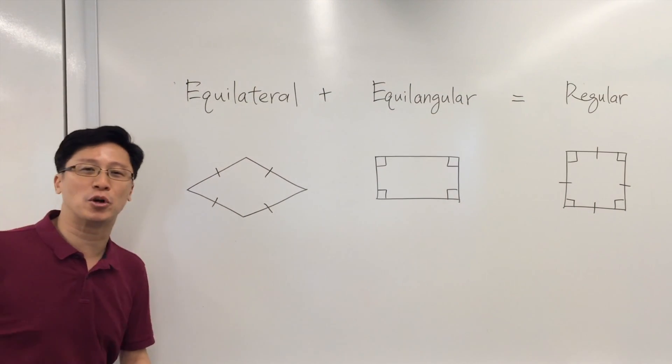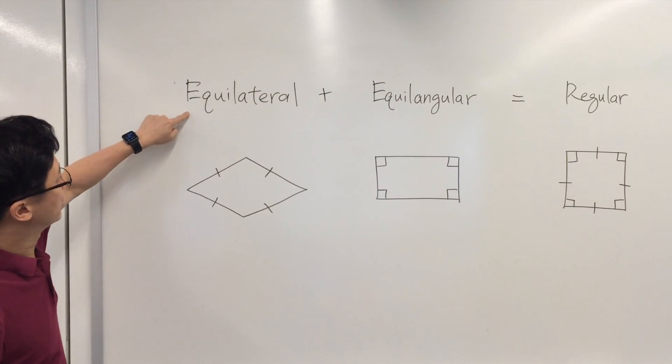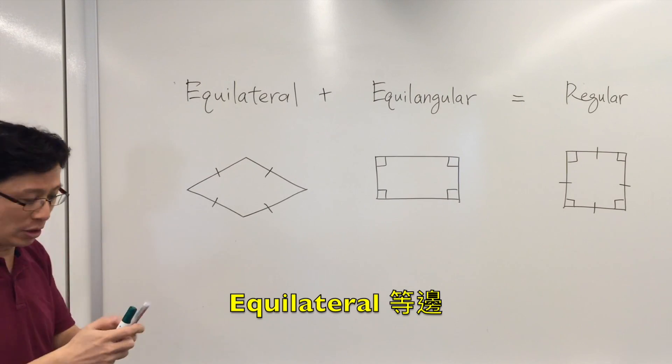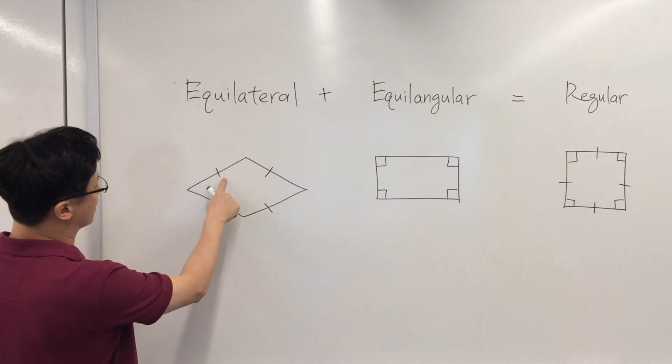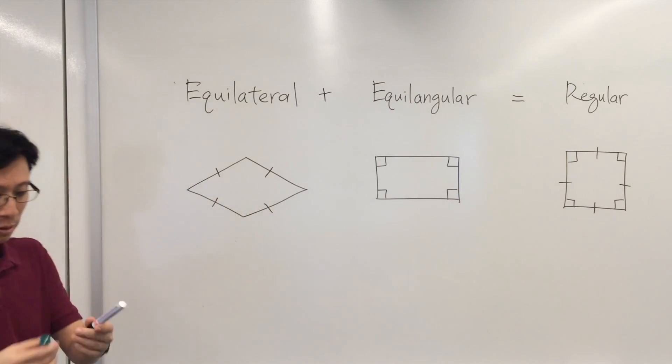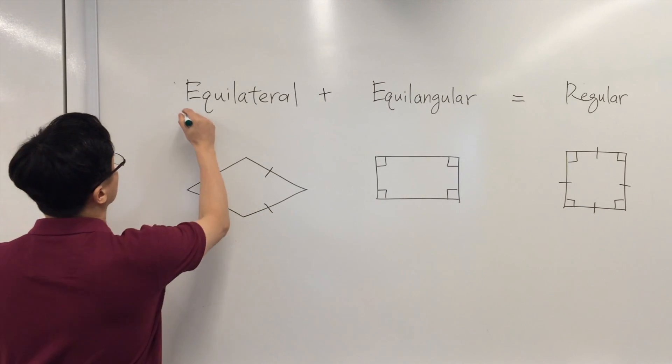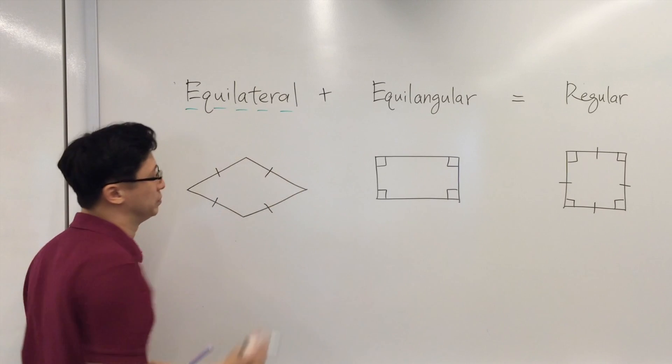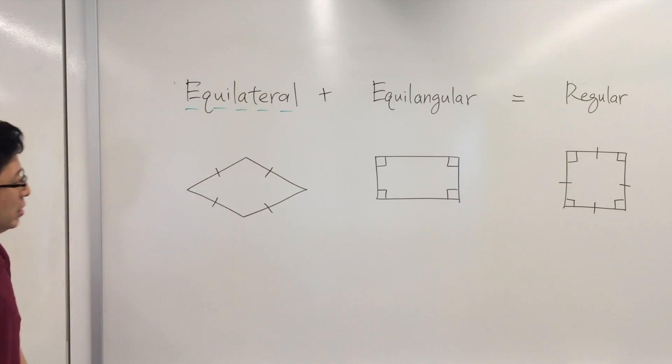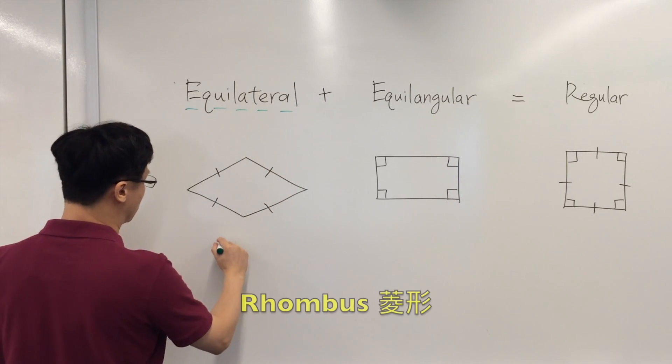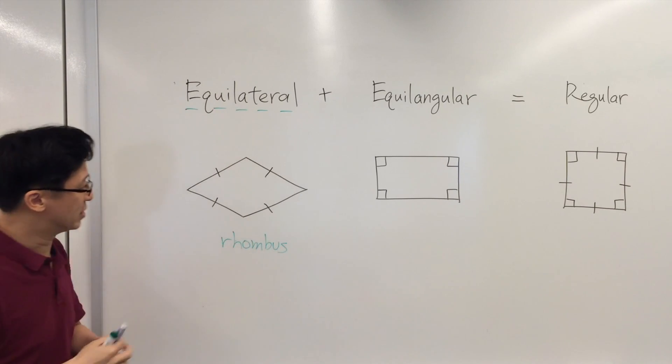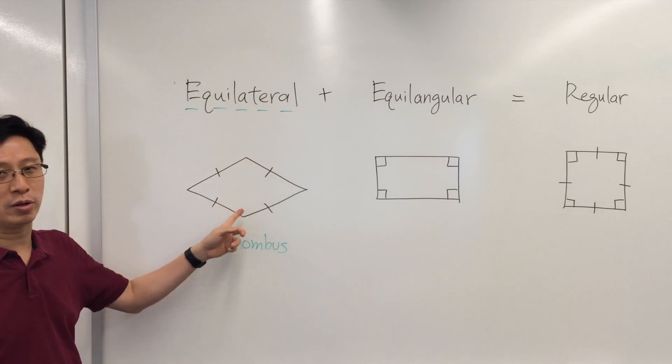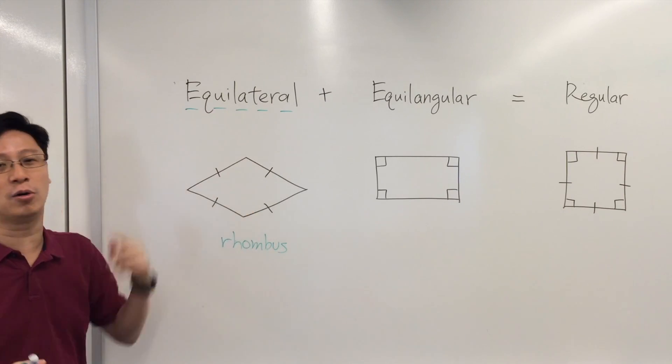Now let's look at some special polygons. This one is an equilateral polygon, and since this is a quadrilateral, it will be like this - it has four equal sides. Equilateral quadrilateral. And of course we know this name - this is a rhombus. A rhombus is a polygon with four sides that are all equal to each other.